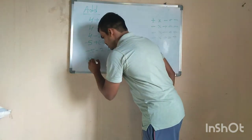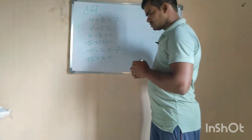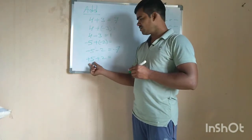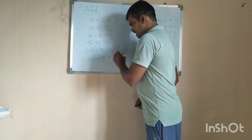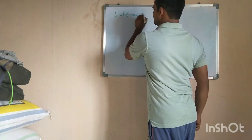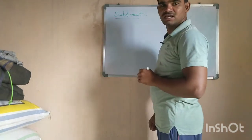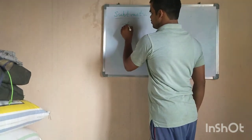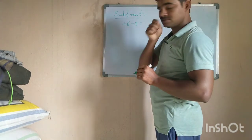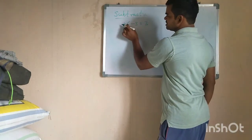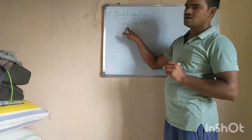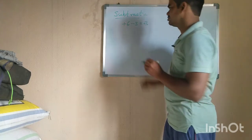Similarly, plus 5 plus 2: when we have the same signs, just add the values — 5 plus 2 equals 7 — and keep the same sign. Now subtracting integers: take plus 6 minus 3. When we have two opposite signs, just subtract the values: 6 minus 3 equals 3. The number with the greater value gives its sign to the answer — 6 is greater and its sign is positive, so the answer is positive 3.